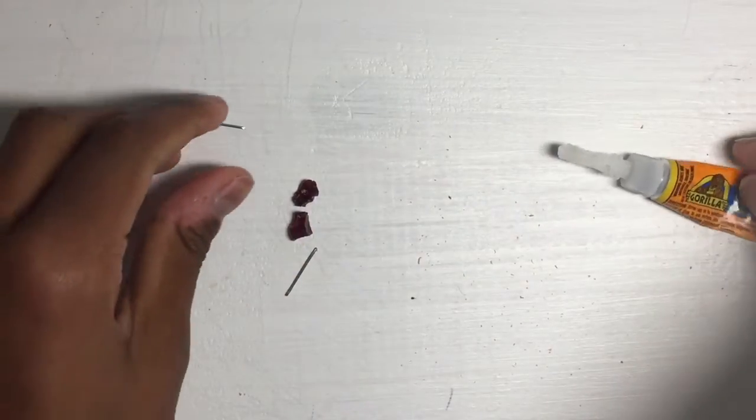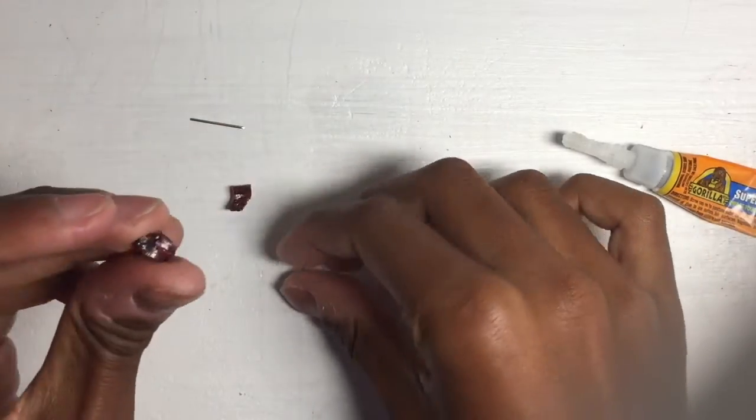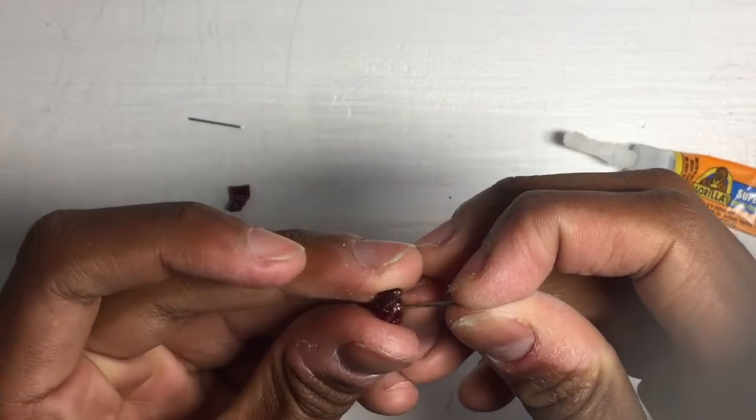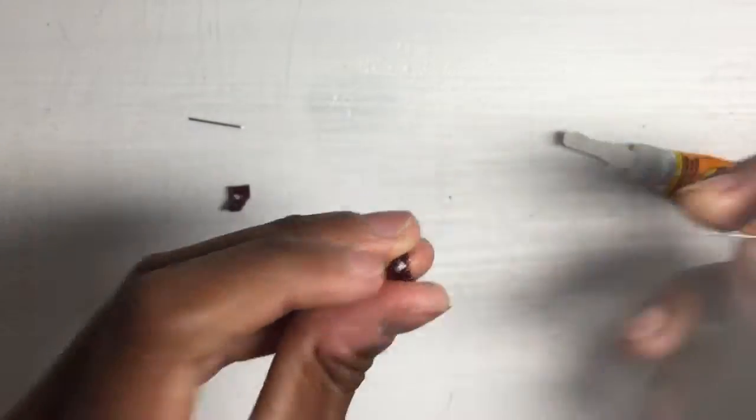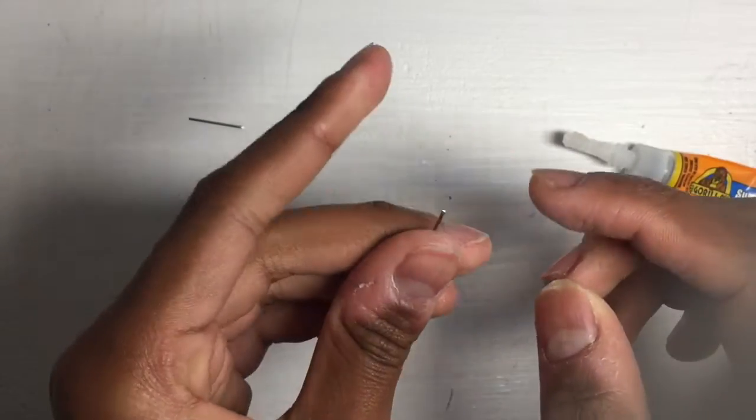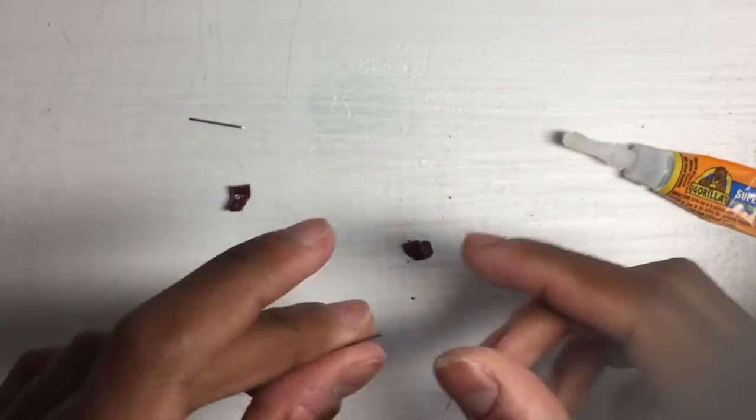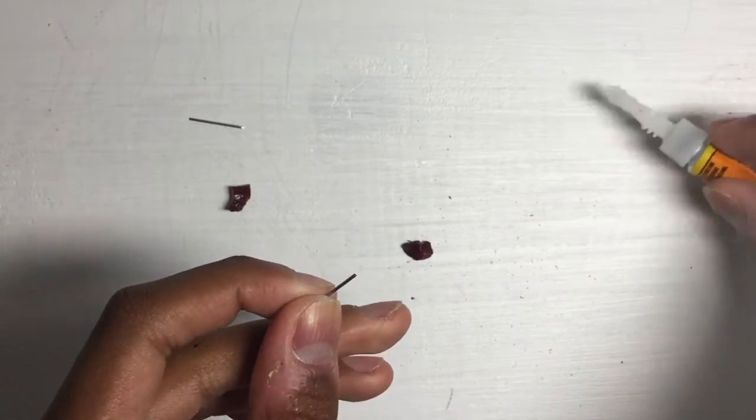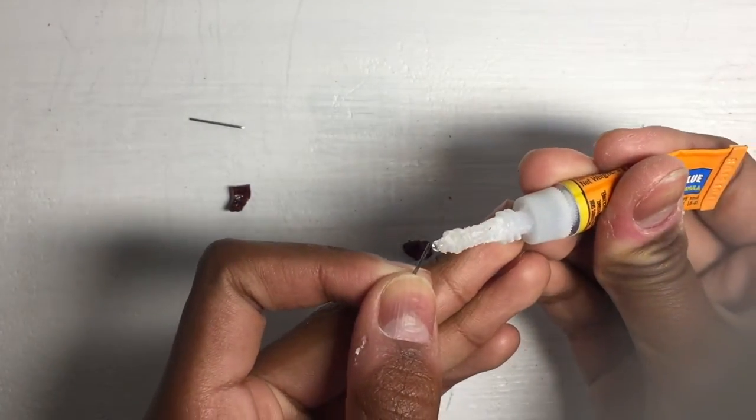Alright, so we are now ready to mount our pins, our stud things, whatever you want to call them. So I'll just put a little dab of super glue on here, pop it into there, and then let it set up. And then we'll finish it up from there.